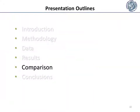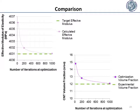Now we come to the comparison. Selecting from each optimization case the calculated effective modulus and volume fraction and plotting them in two figures, we can easily make the following comparison. As we can see, the calculated effective modulus of the optimization case having 1000 iterations is really close to the target modulus.